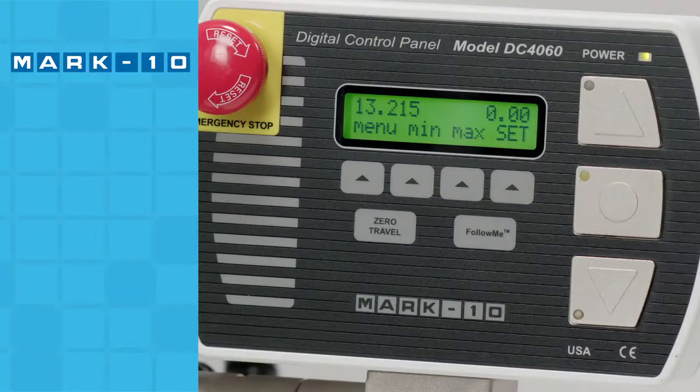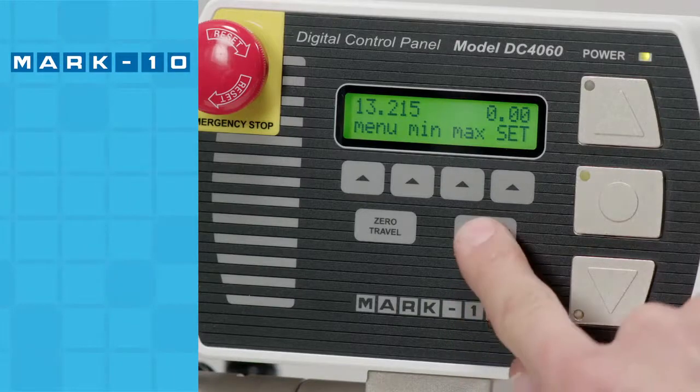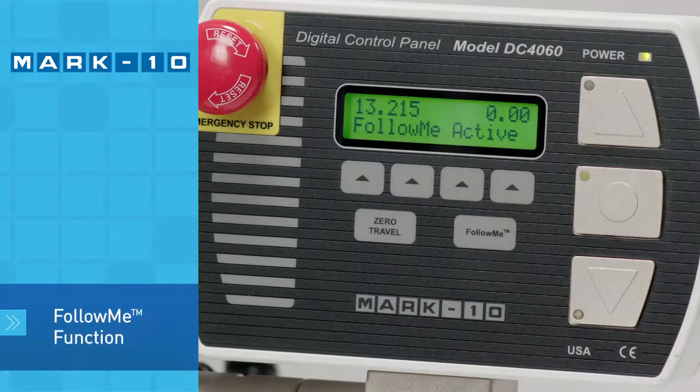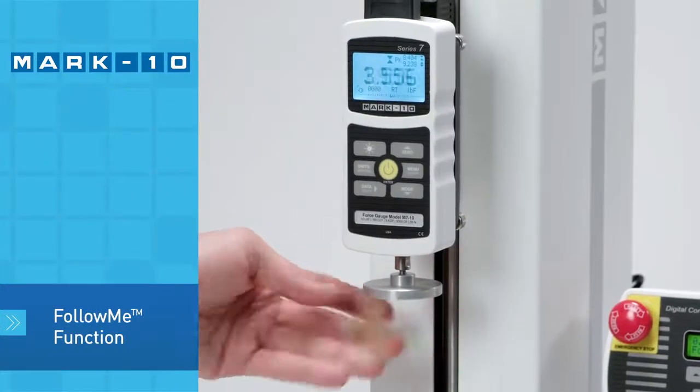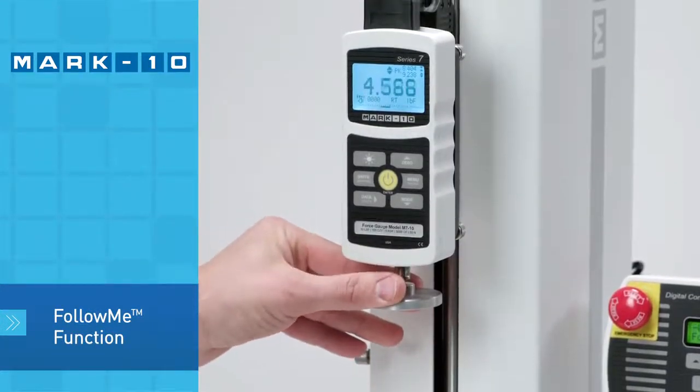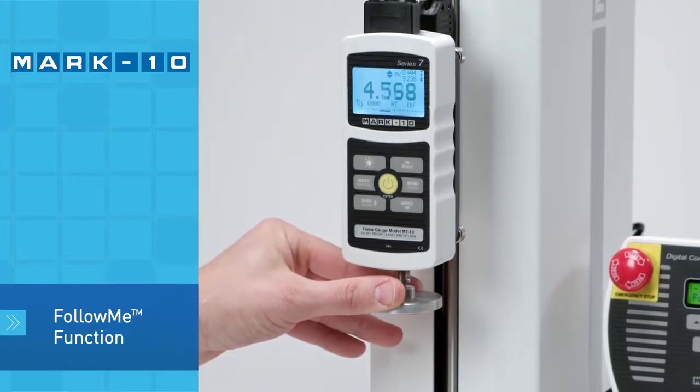Cross-head positioning prior to or after a test is easy with the unique follow-me function. Simply push and pull on the force gauge or load cell to move the cross-head. The greater the force, the faster the speed.